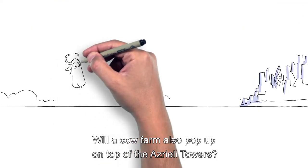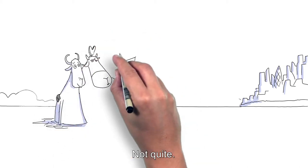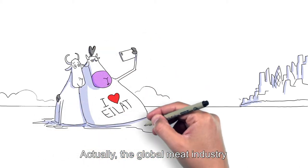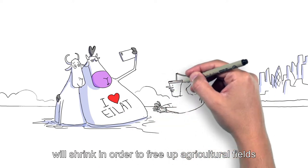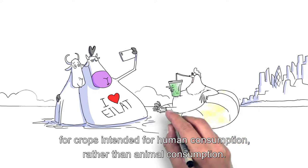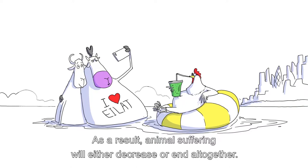What about meat? Will a cow farm also pop up on top of the Azraeli towers? Not quite. Actually, the global meat industry will shrink in order to free up agricultural fields for crops intended for human consumption rather than animal consumption. As a result, animal suffering will either decrease or end altogether.